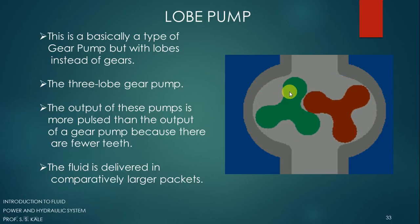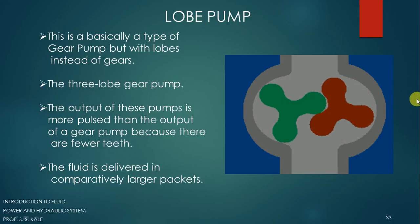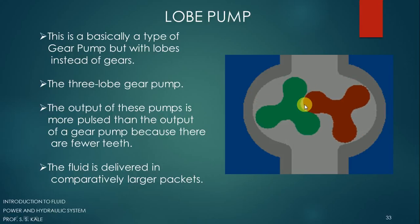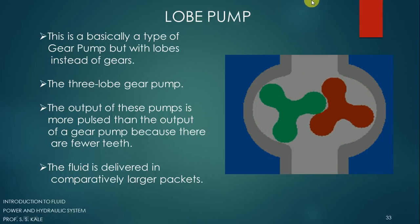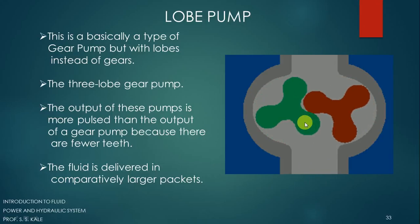In a gear pump there are many gear teeth — like 20 or 30 depending on the diameter — whereas here only three lobes are present. This particular port is called the inlet port of this pump, and this particular port is called the outlet port. So oil is taken in from this side and delivered on the other side.